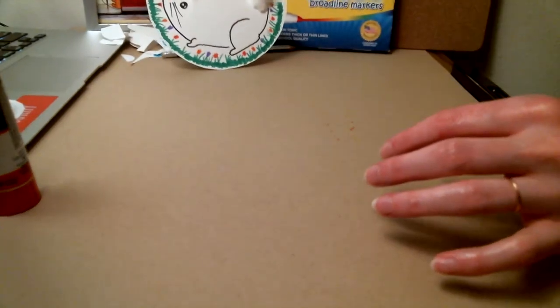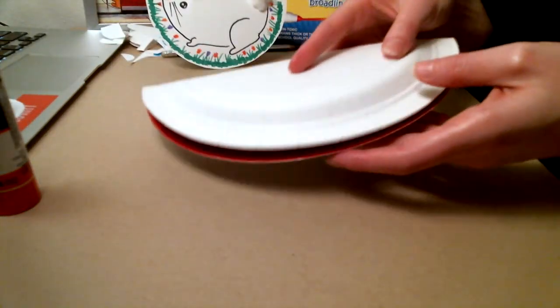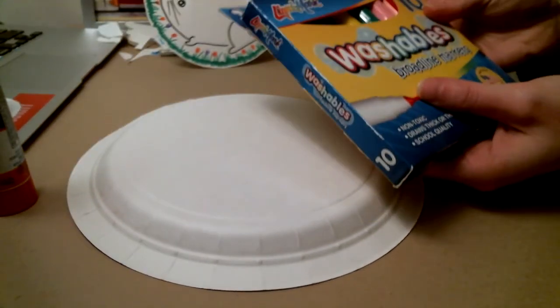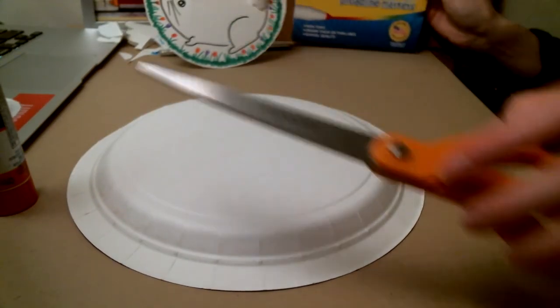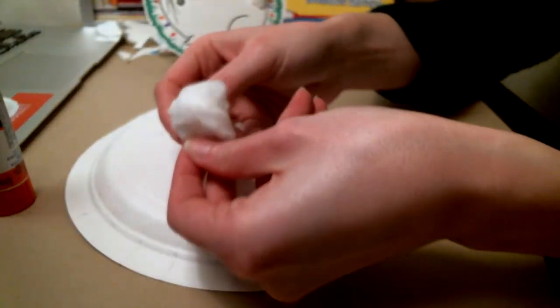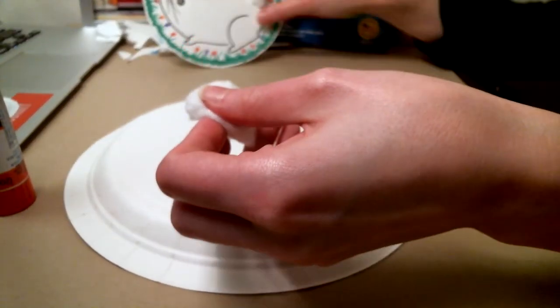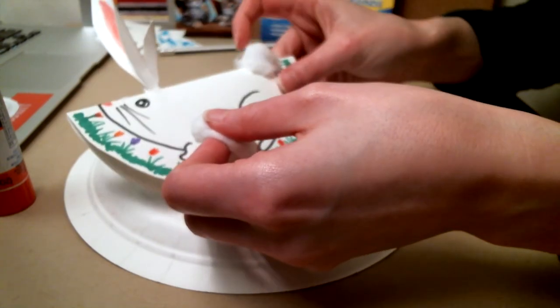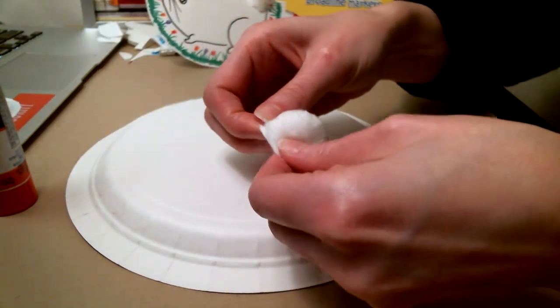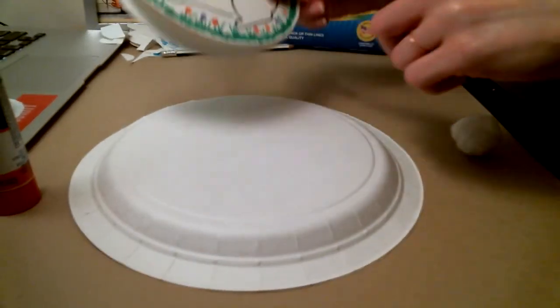So I already have folded one of my paper plates. For this, I will need paper plate, markers, scissors, and a cotton ball. Now, if you are making a smaller rabbit, you can use more than one cotton ball. This is actually part of the cotton ball I used and tore off some for this.